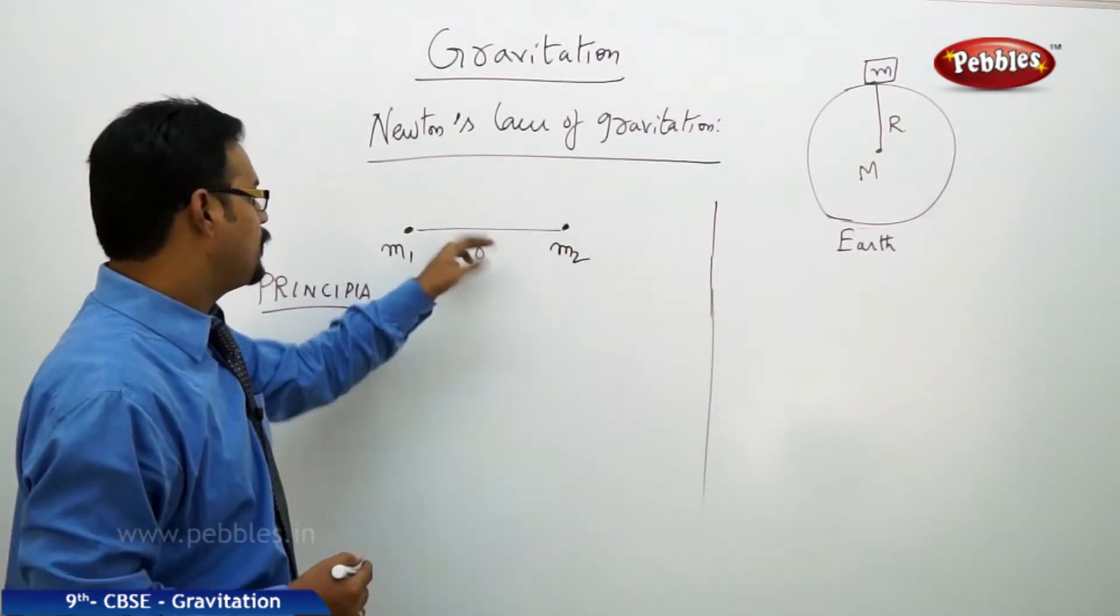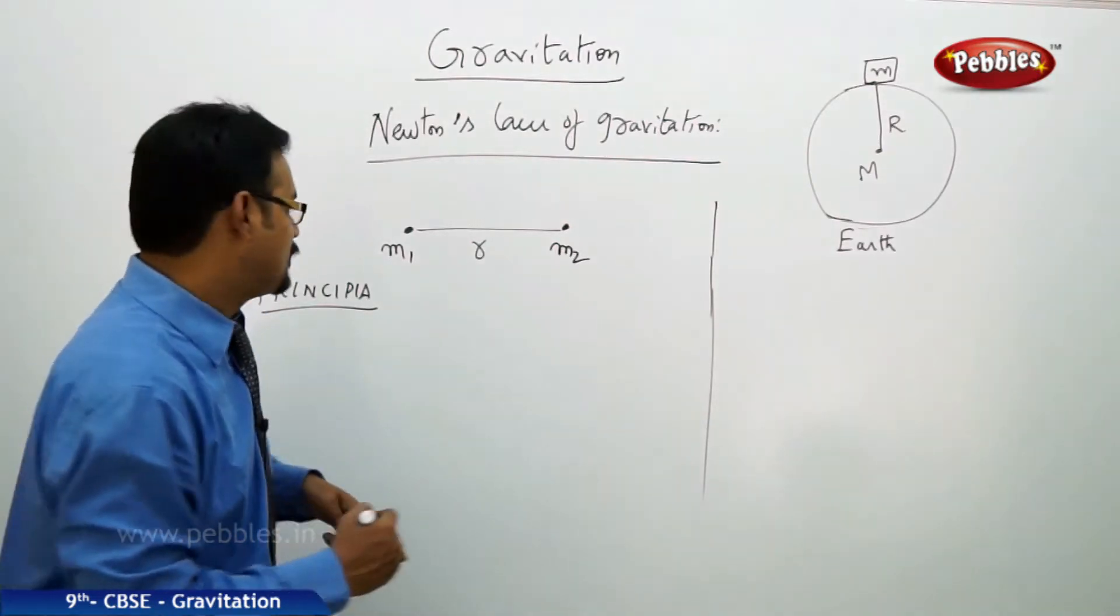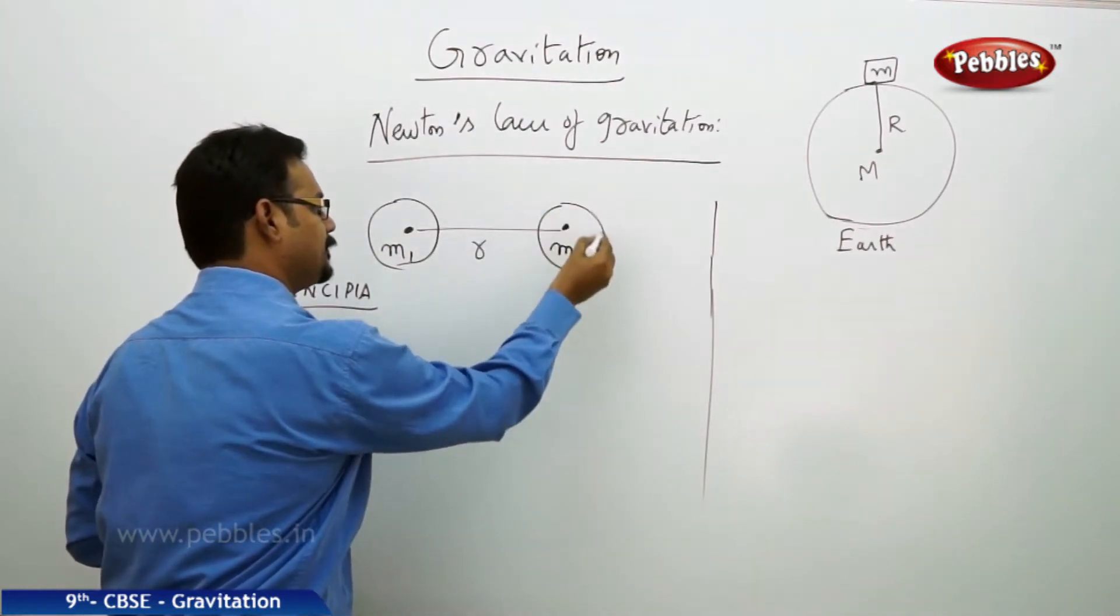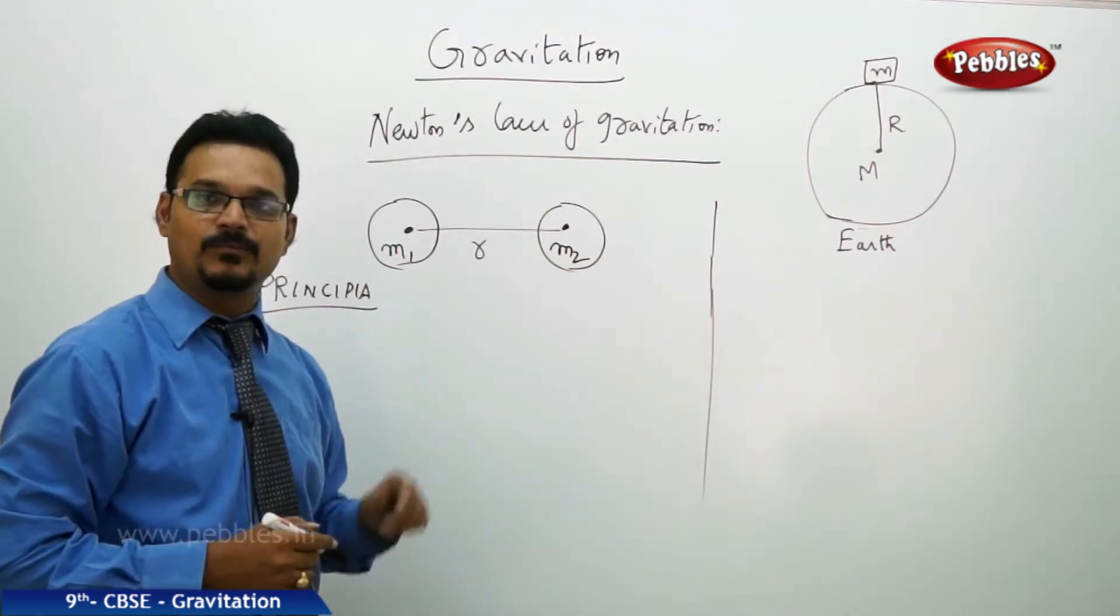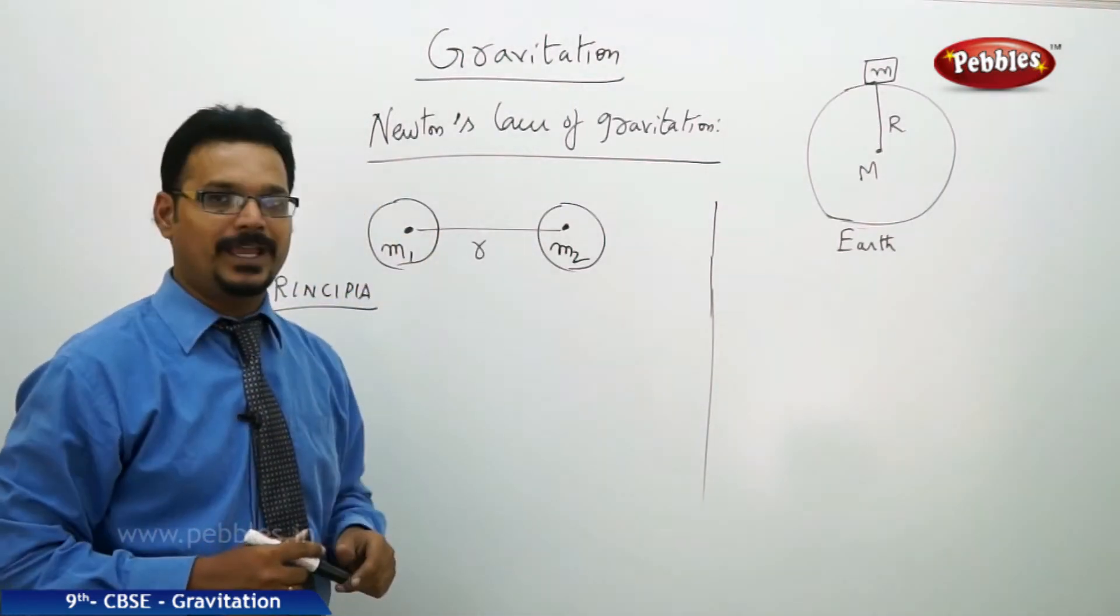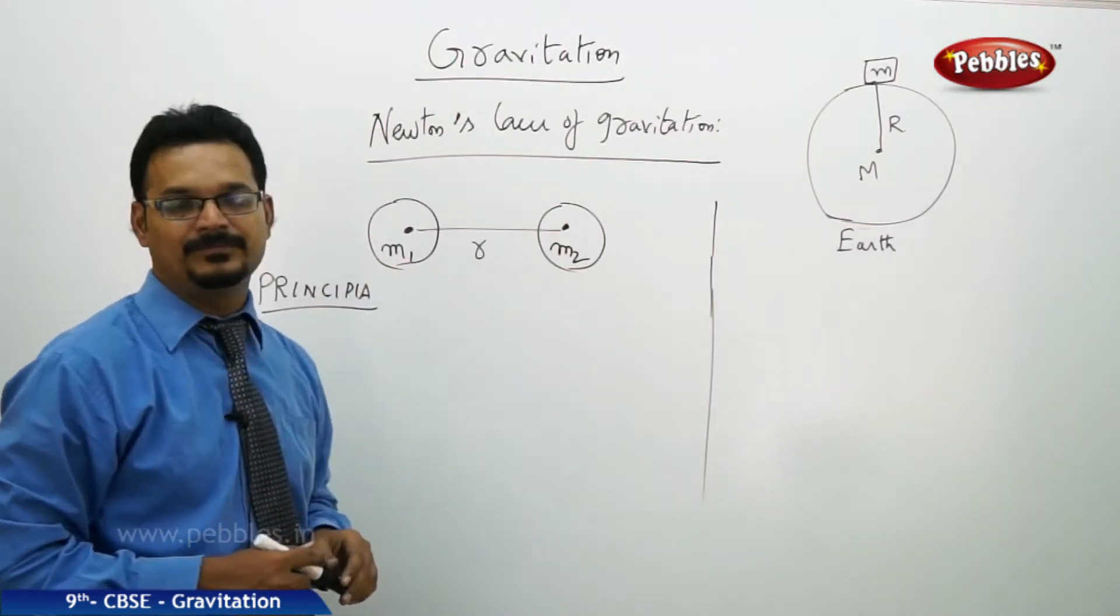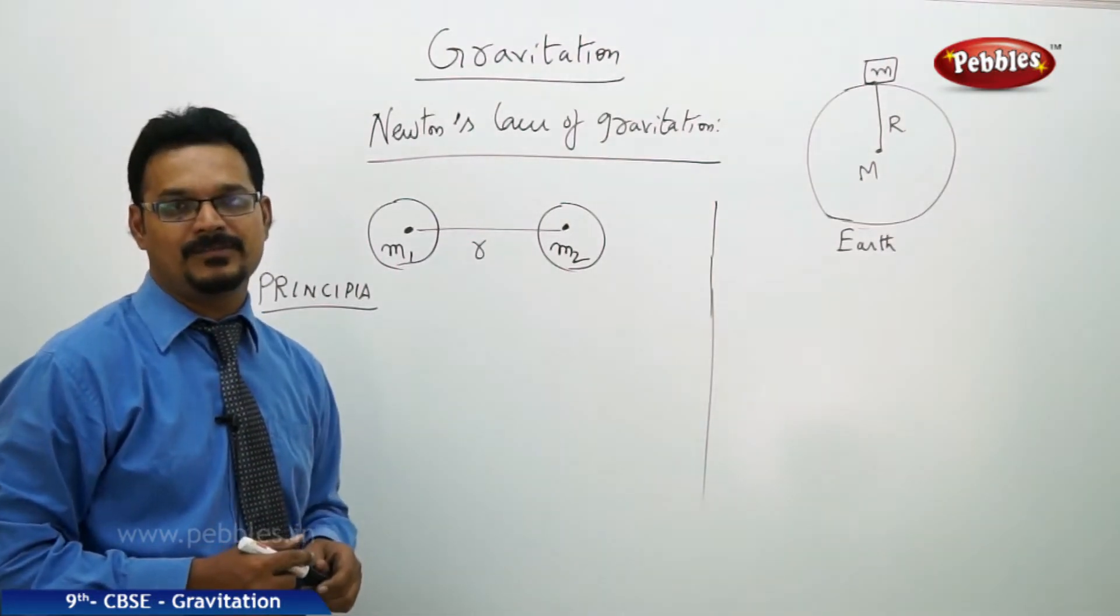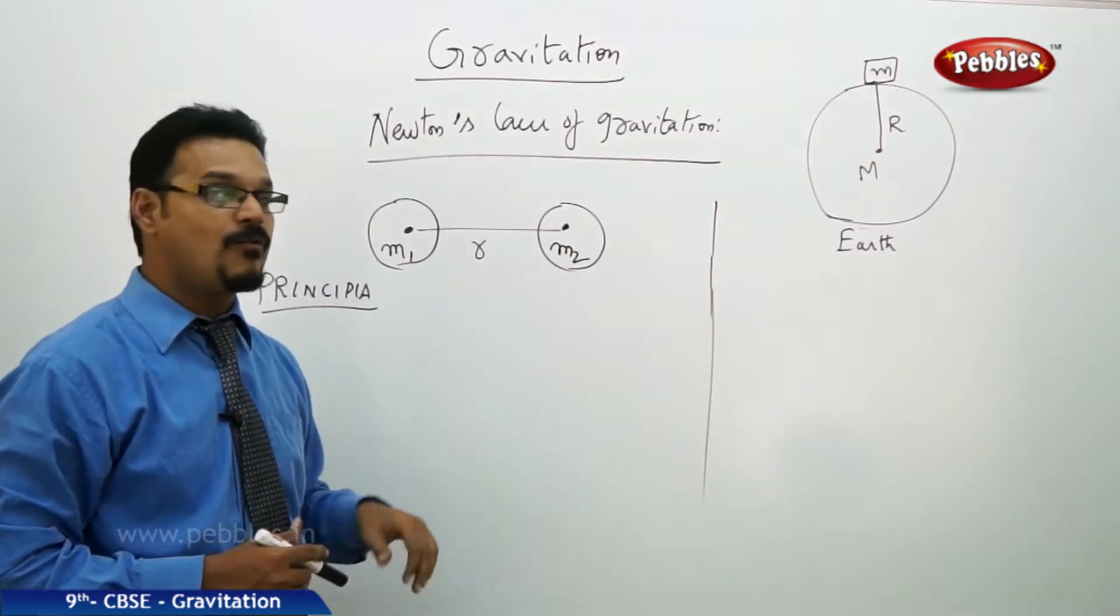You may have taken m1 and m2 as two point masses, but it is not always correct. Sometimes you can take big masses like big spheres. Still this diagram is correct because what Isaac Newton mentioned was that, however big the body you take, the total mass is always concentrated at a point in the body, and that point is called center of mass.